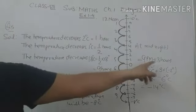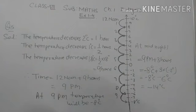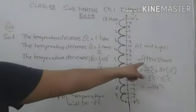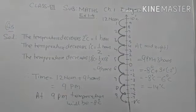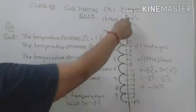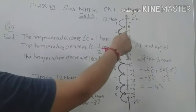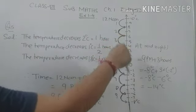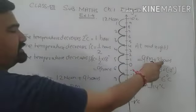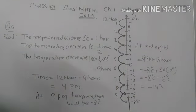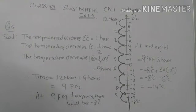We add 9 PM plus 3 hours and get 12 midnight. At 9 PM, temperature is minus 8 degrees. In 3 hours, temperature decreases 6 degrees — 1 hour is 2 degrees, after 2 hours 4 degrees, after 3 hours 6 degrees. So in 3 hours temperature decreases 6 degrees. After 9 PM: minus 8 plus minus 6 gives minus 14 degrees.